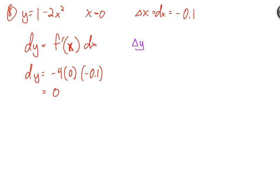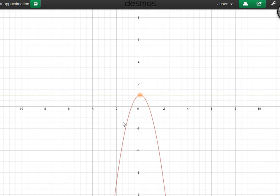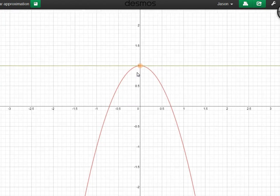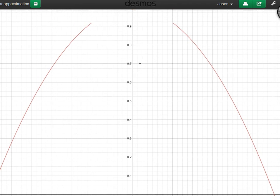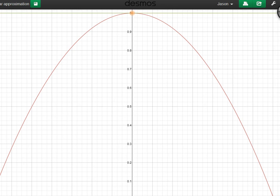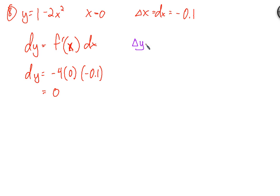We need to look at the actual function, y equals 1 minus 2x squared. Let's zoom in on this a little bit. You can see that this is negative 0.1 actually, so 1 tenth of that, it's right about there, would be negative 0.01. And so the delta y would be the change in y from here down to right there. So not very much, it's not going to be much different from 0.